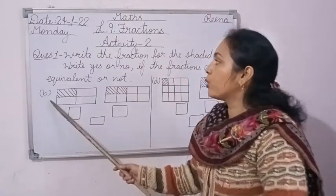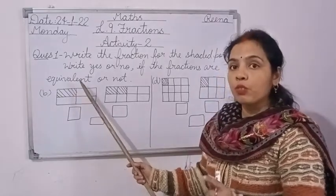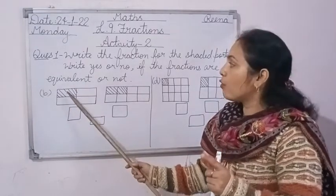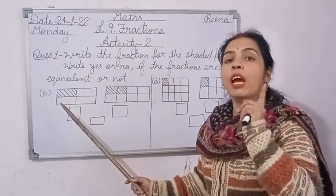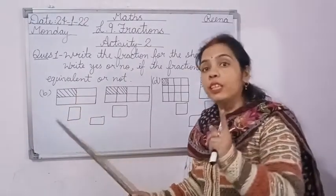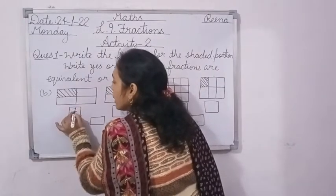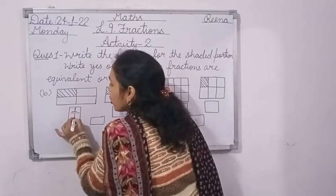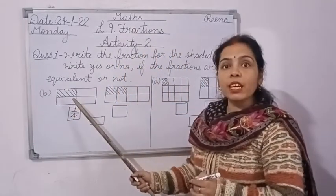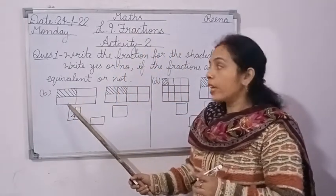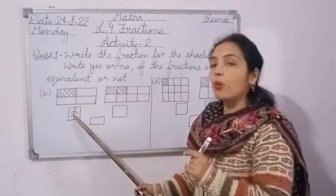In part B you have only one shaded part — that means one shaded portion out of four portions. So write the fraction for the shaded part: one upon four. Total number of parts are four, and only one portion is shaded, so the fraction is 1 upon 4.